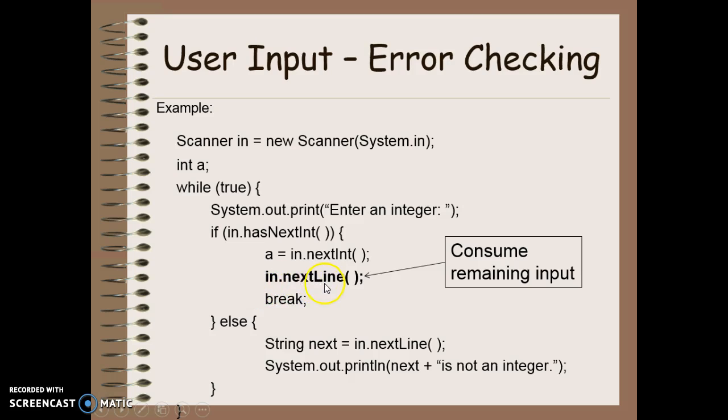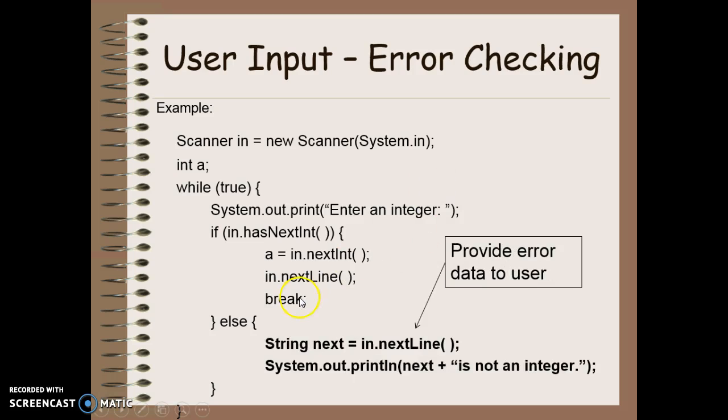The next line of code here is essentially going to consume any other input that was typed in. So for example, the actual enter key itself or if they typed in extra words after they gave me a number. It's going to consume that data and instead of storing it somewhere, it's just going to delete it so that I can be ready for the next time I want to input something else. I then break out of my loop and I'm ready to go on. If however, the data they gave me is not an integer, I'm then going to input whatever they put in as a string so that I can use that data as an informative prompt back to the user telling them that whatever it is that they typed is not an integer. My code would then come back up to the loop where I would tell them to enter an integer again and I would continue from there.